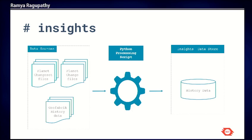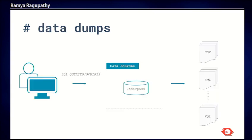Similar to Underpass, Insights has a Python processing script. It ingests minutely files, changeset files, and change files from Planet, with initial data loading done through Geofabric extracts. At the end of processing, the script updates one database containing all OSM history — unlike Underpass, which has three separate stores for raw data, statistics, and validation.